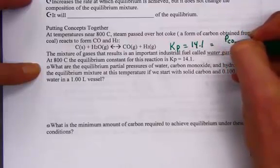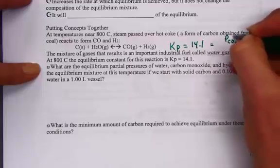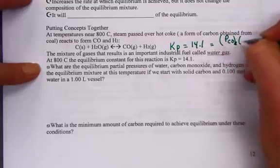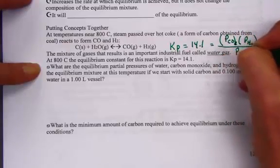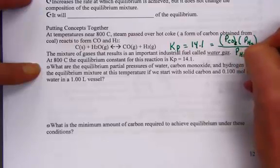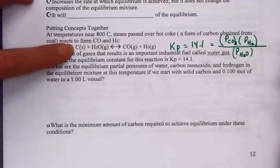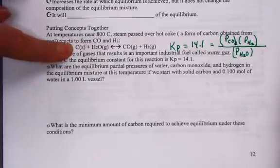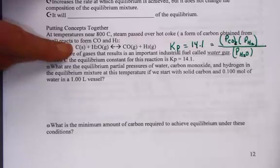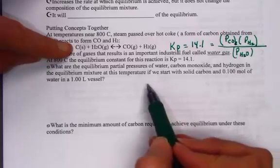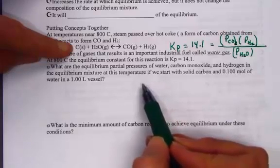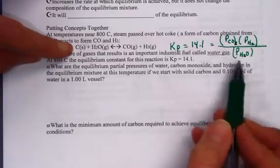We need to know the partial pressure of carbon monoxide, CO, times the partial pressure of hydrogen, H2, set over the partial pressure of H2O. Notice how the solid carbon does not play a role in the Kp expression. Pure solids and pure liquids simply drop out.